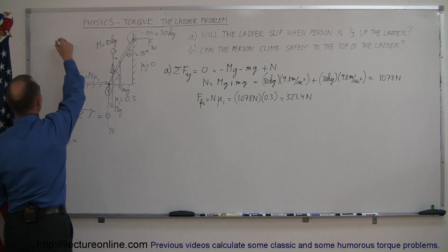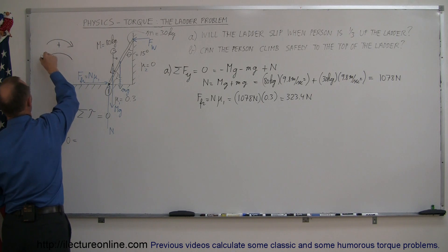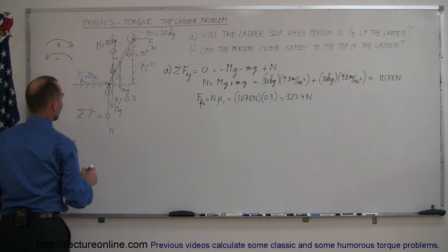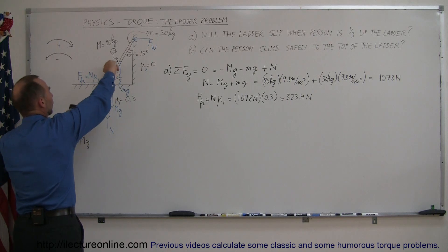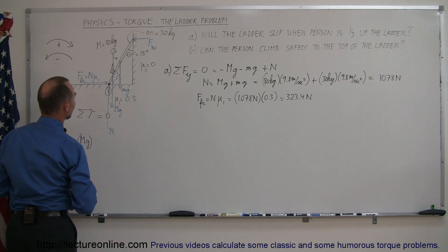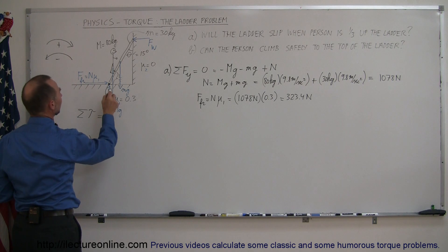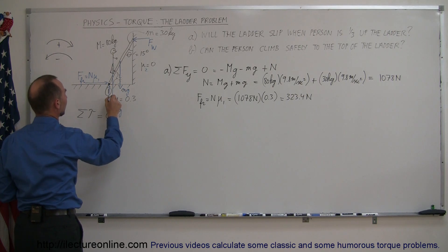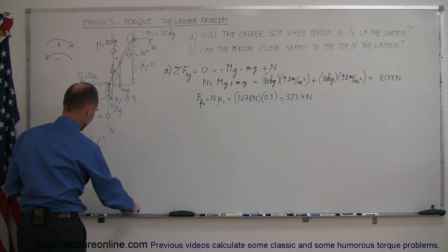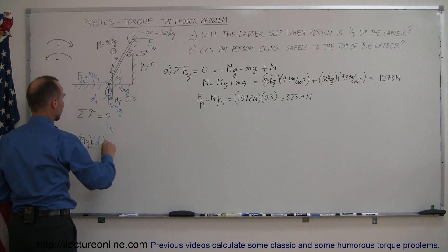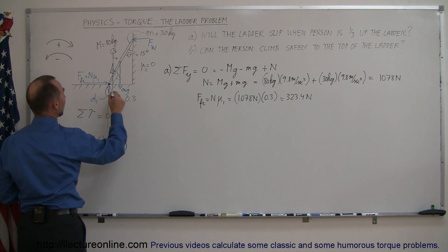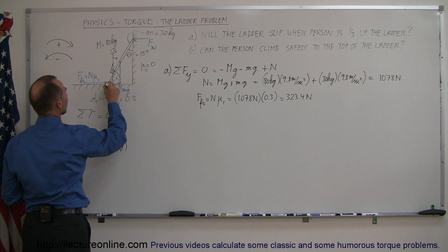So, zero equals the torques. Clockwise torque is positive, counterclockwise torque is negative. We have big Mg — since that causes the ladder to rotate clockwise, it's positive — multiplied by distance D1, the perpendicular distance from the pivot point to the line of action of that force. Plus little mg — also a clockwise torque — multiplied by distance D2, the perpendicular distance from the pivot point to the ladder's center of mass.